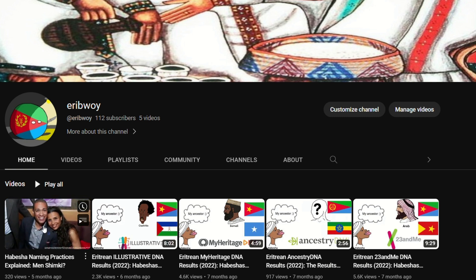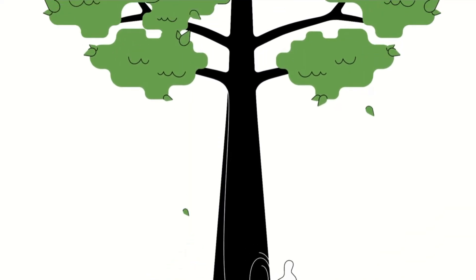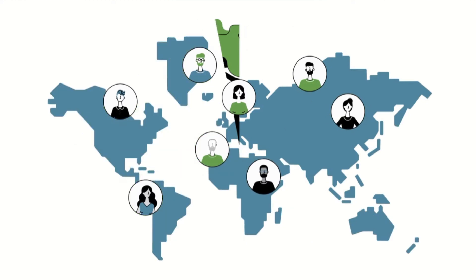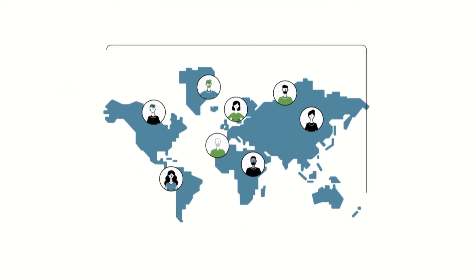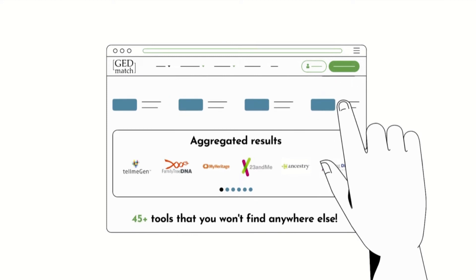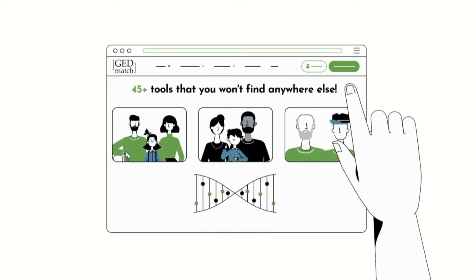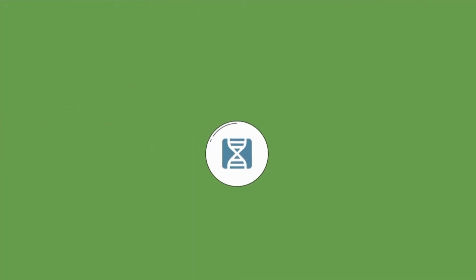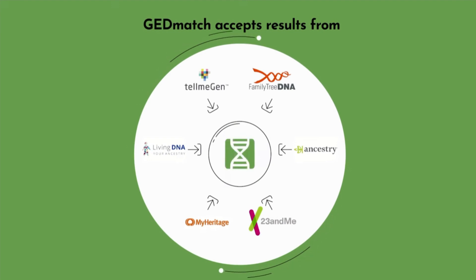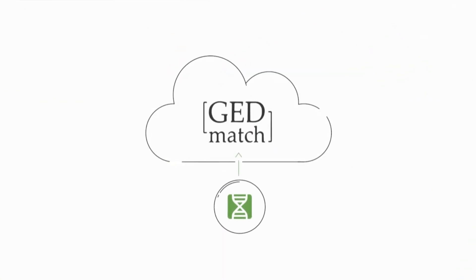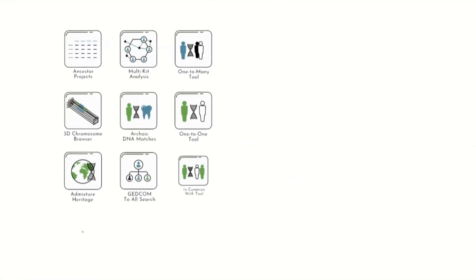In this video, I'll be briefly discussing my GEDmatch DNA results. GEDmatch is similar to Illustrative DNA in that you create an account and upload your raw DNA data to the website to receive your results. You can get your raw DNA data from one of the other DNA testing companies like 23andMe or AncestryDNA that requires a DNA sample from you. Different DNA testing companies will have instructions on their websites on how to download your raw DNA data. I downloaded my raw DNA data from 23andMe and uploaded it to GEDmatch. You get your results within 24 hours after uploading.